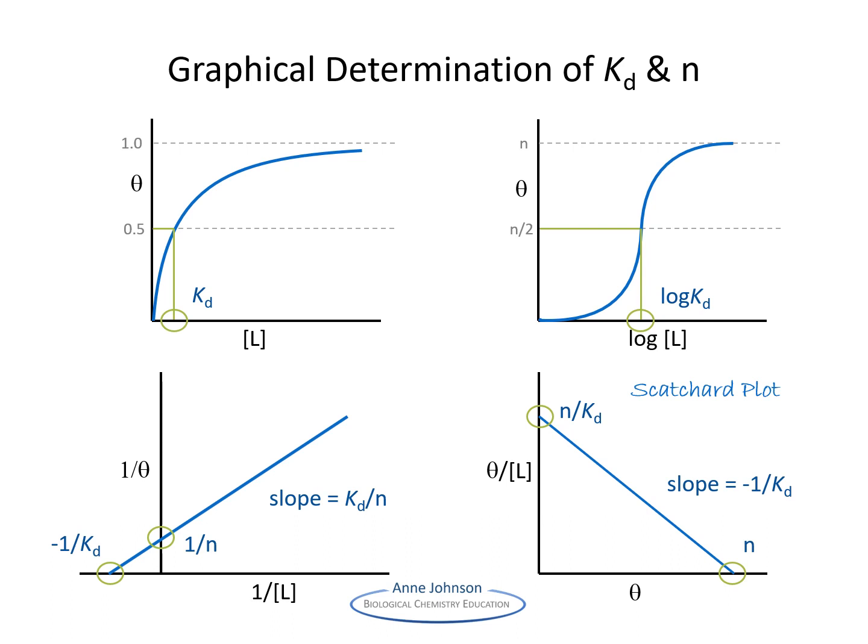If you're having trouble remembering what the values we're getting from the intercepts are, here is how to remember. Look to see what is plotted on that axis, and use the relationship between what is plotted and the constants. Kd relates to ligand concentration and N to theta. So on the double reciprocal plot, we have plotted 1 over L on the x-axis, and the constant we are getting is minus 1 over Kd — negative because the intersection point is negative. On the y-axis, we plotted 1 over theta, so the value we get at the intercept is 1 over N.